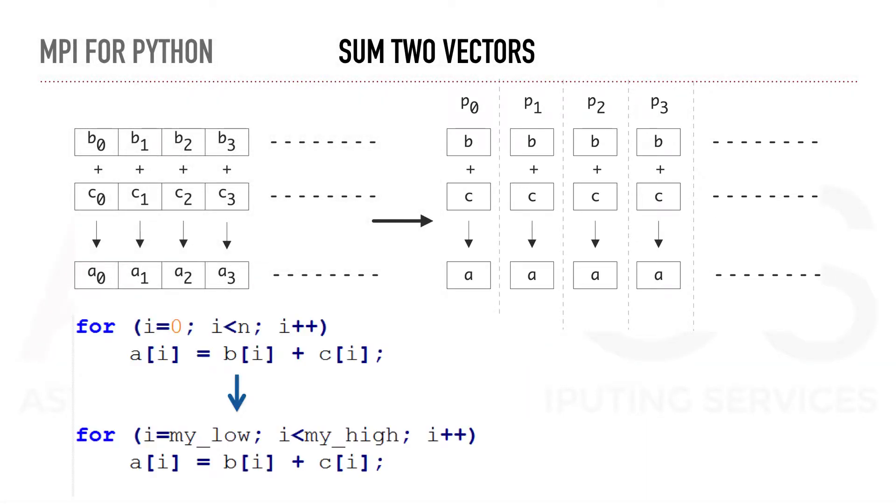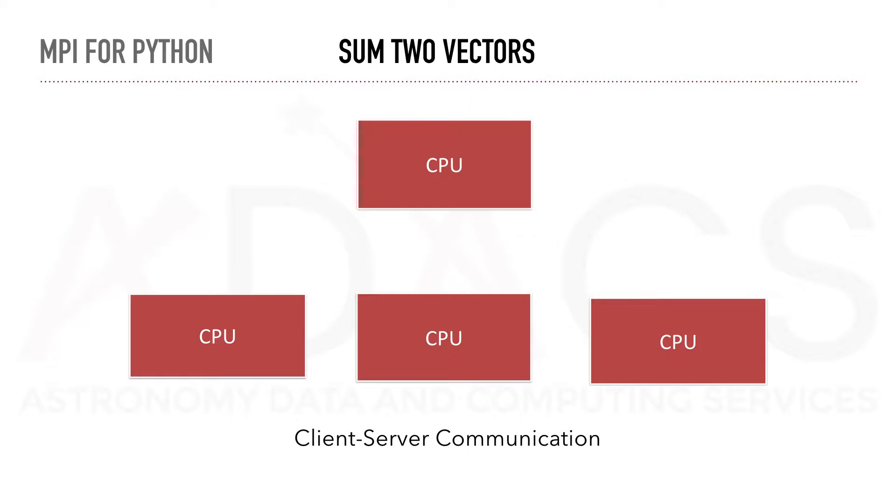This means that we will replace our usual for loop to several for loops where the boundaries are set to correspond to the boundaries set for each process. This is done in a client-server communication pattern.